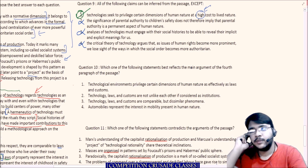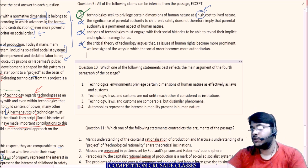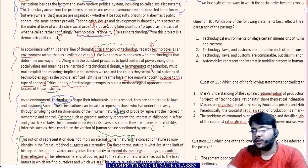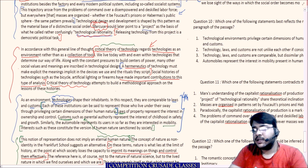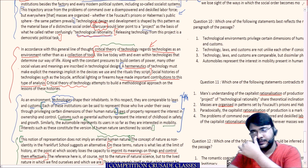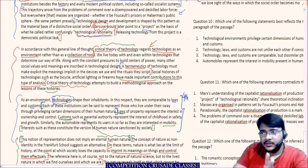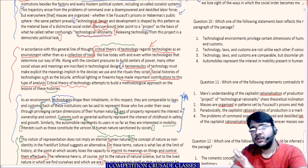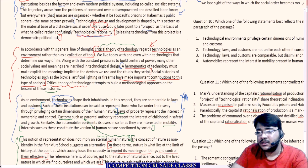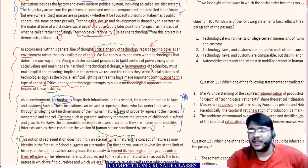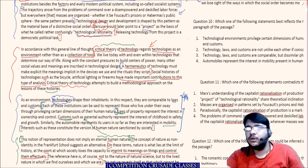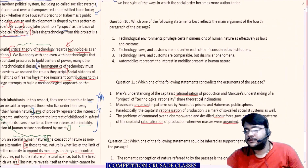Question 2 — 'Which one of the following statements best reflects the main argument of the fourth paragraph?' Let's read the fourth paragraph. 'As an environment, technologies shape their inhabitants. In this respect they are comparable to laws and customs.' There's a context of privilege given to certain dimensions of the inhabitants' human nature, with examples of property laws, customs like parental authority, and the automobile. But these are all examples — the main idea is that as environments, technologies shape inhabitants and are comparable to laws and customs.